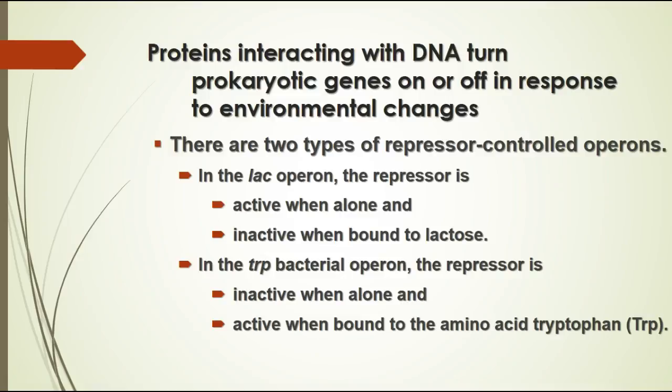Another operon in bacteria is called the trp operon, which is involved in producing tryptophan, an essential amino acid that most of the time is needed in the bacterium. In this case, the repressor is inactive when not bound to tryptophan, but when it does bind to tryptophan it attaches to the operator and blocks transcription. Think about what happens when you eat a big turkey dinner — turkey has lots of tryptophan, so E. coli in your gut don't need to make tryptophan when there's plenty of it present.